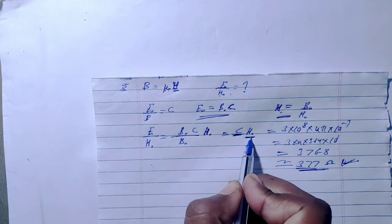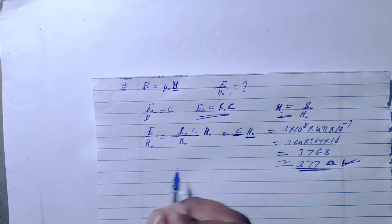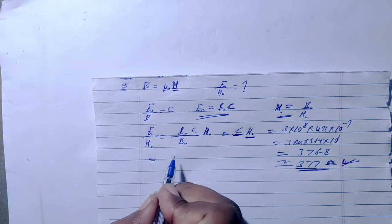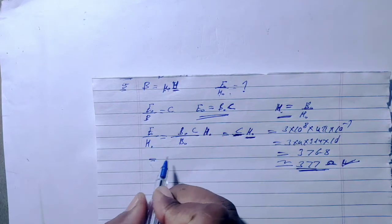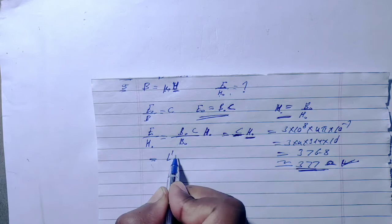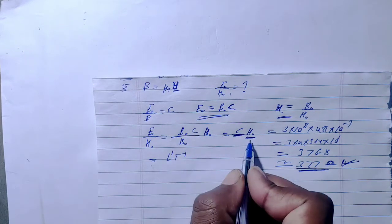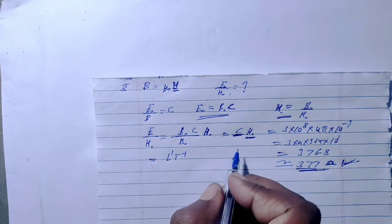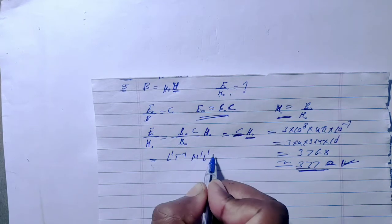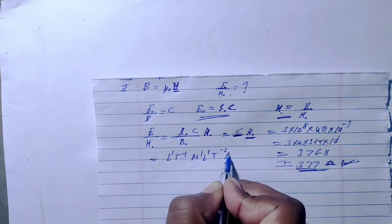See, the speed of light has dimension length by time, that is L1 T minus 1. And mu-naught has dimension M1 L1 T minus 2 A minus 2.